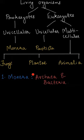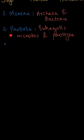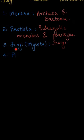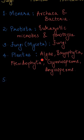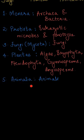Kingdom Monera includes archaebacteria and bacteria. Kingdom Protista includes eukaryotic microbes and protozoa. Fungi, also called Mycota, includes fungi. Kingdom Plantae includes algae, bryophyta, pteridophyta, gymnosperms, and angiosperms. Kingdom Animalia includes animals.